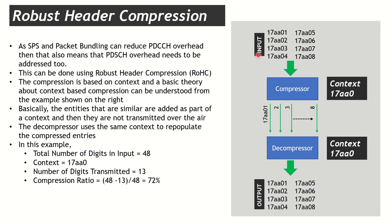What is the compression ratio? Counting the digits in the input, total digits are 48. Using the context '17AA0', the number of digits actually transmitted over the air were only 13. So the compression ratio is (48 − 13) / 48 = 72%. We only sent around 28% of this sequence over the air and the decompressor was able to decompress it successfully.